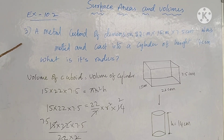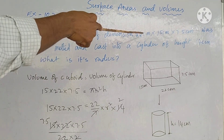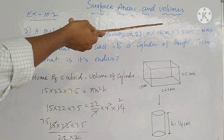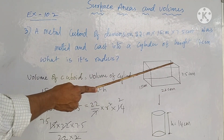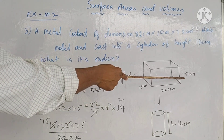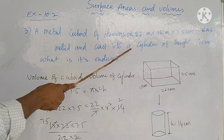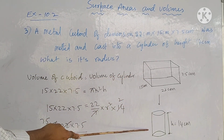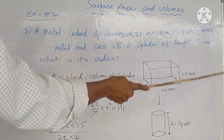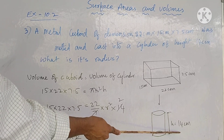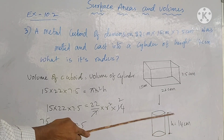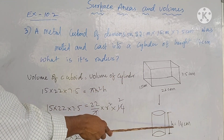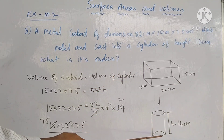Exercise 10.2, question 3: A metal cuboid of dimensions 22 cm × 15 cm × 7.5 cm was melted and cast into a cylinder of height 14 cm. What is its radius? Since the cuboid is melted into a cylinder, volume of cuboid = volume of cylinder.